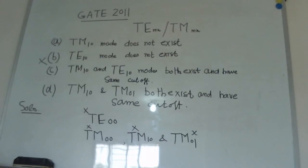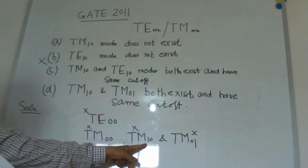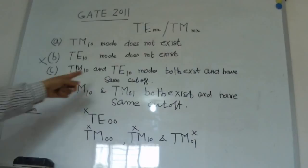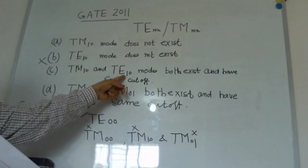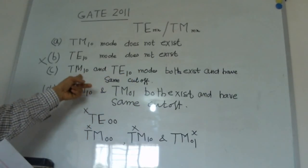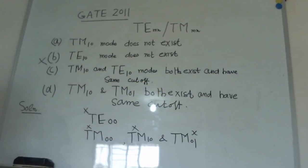Now, option C says that TM_10 and TE_10 both exist and have the same cutoff. We see TM_10 does not exist, so this is the wrong option. This option is the wrong option.